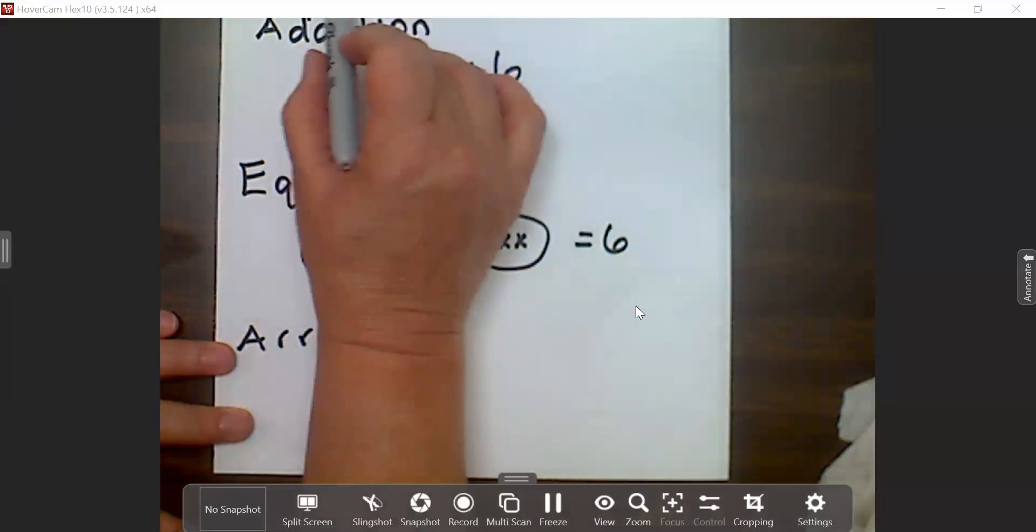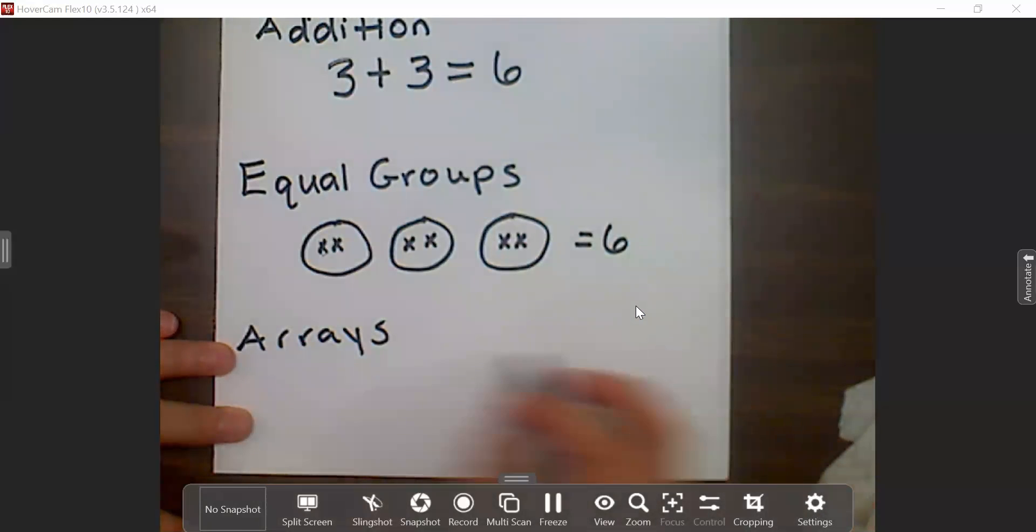So in the problem, three times two equals six... Three times two equals six. This is telling me I'm going to have three rows with two in each row.